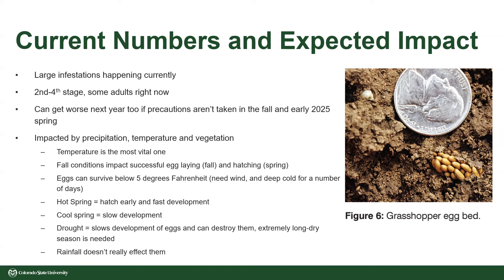The tiny ones are the babies — the newest hatchlings. The older ones with wings are full-fledged adults, and unfortunately your options are very limited for those. We're looking at the second and fourth stage right now. They can get worse from year to year if precautions aren't taken in the fall and early spring. If you don't do anything in the fall, you're going to have them just as bad next year. It's a year-long process — not a one-and-done option.